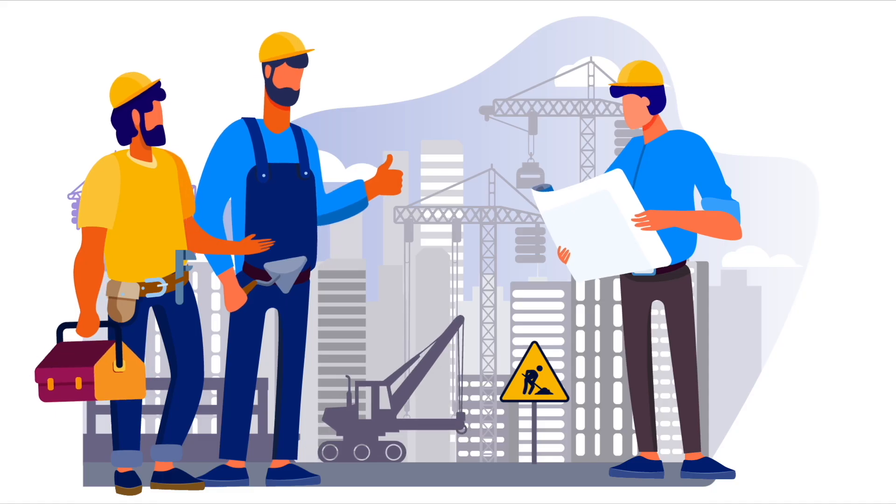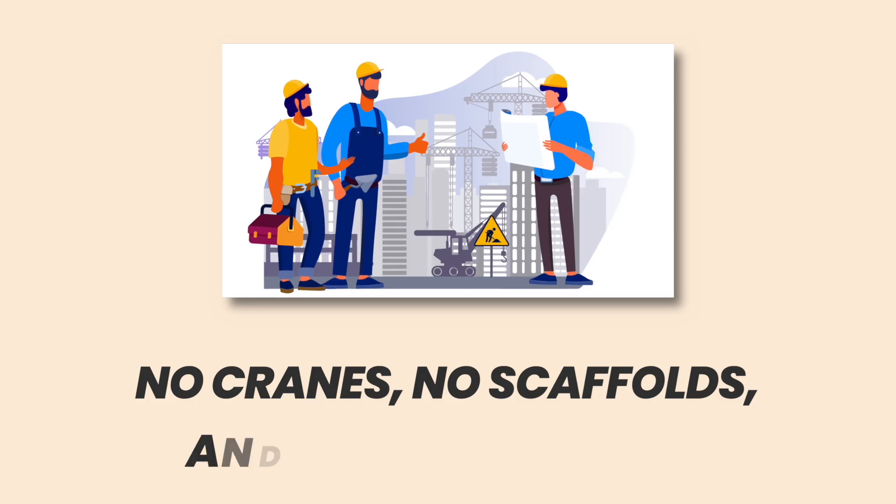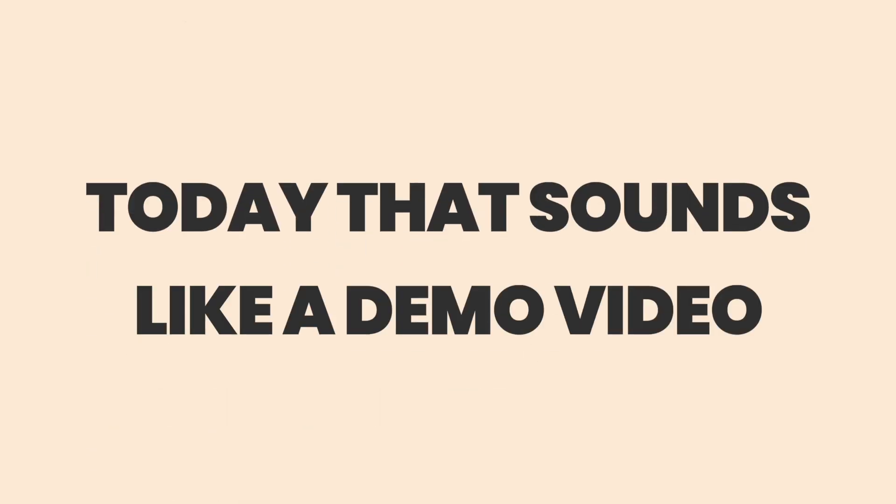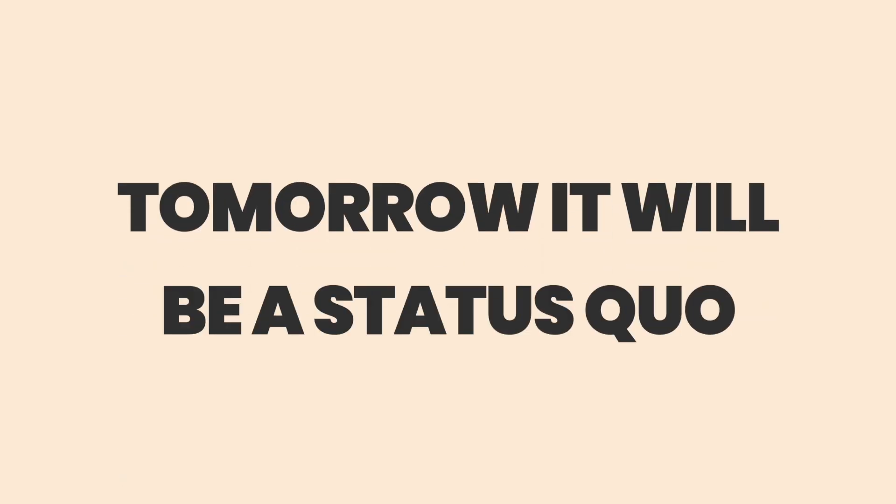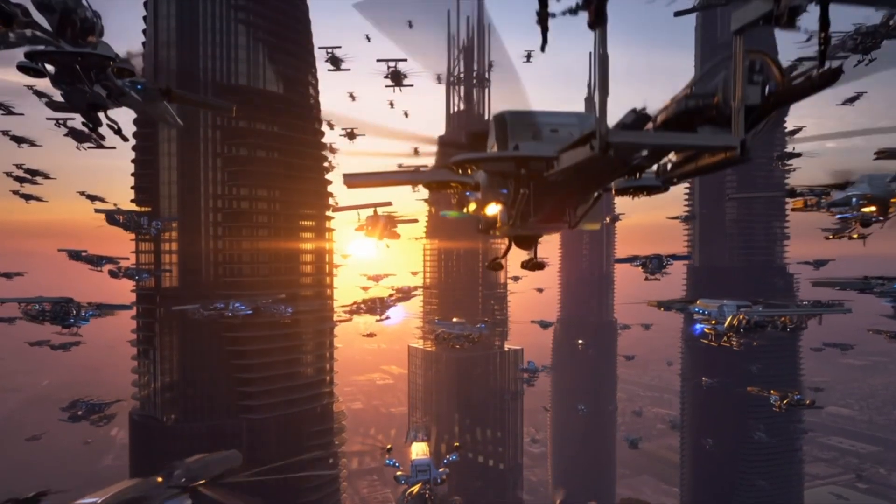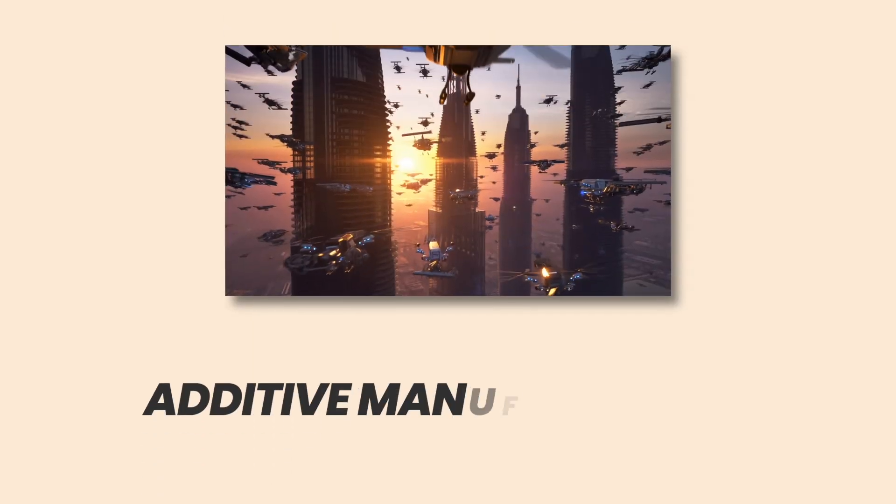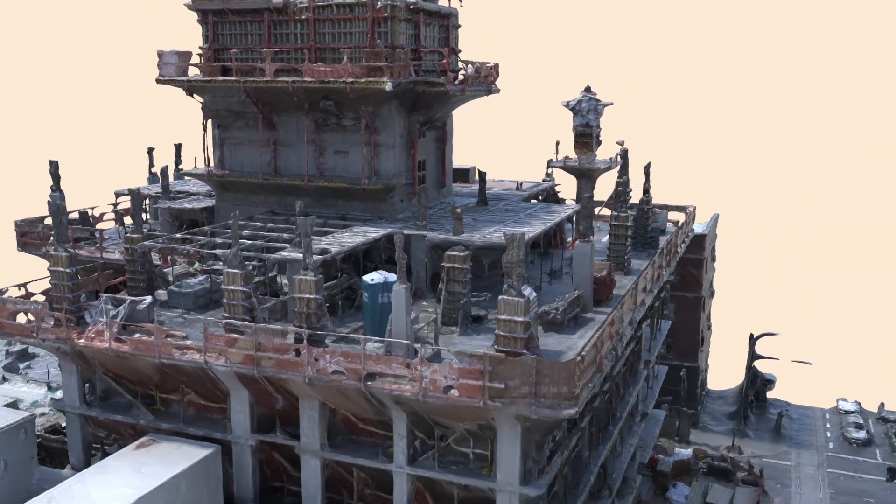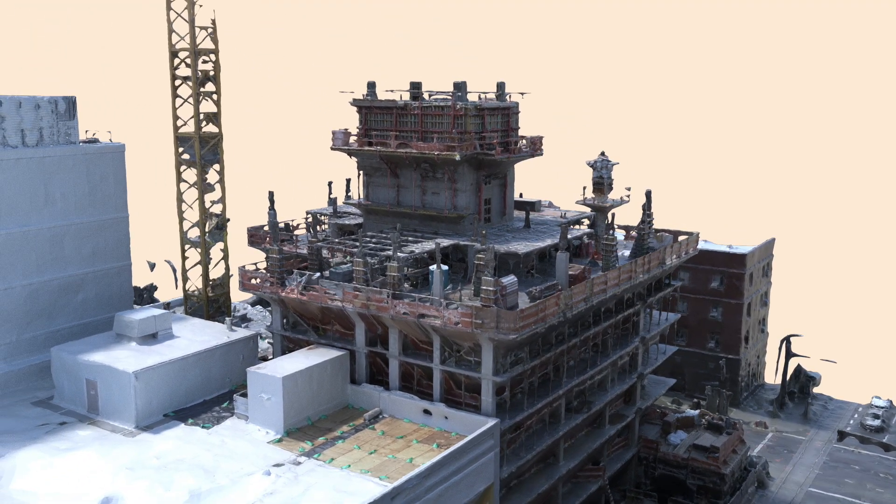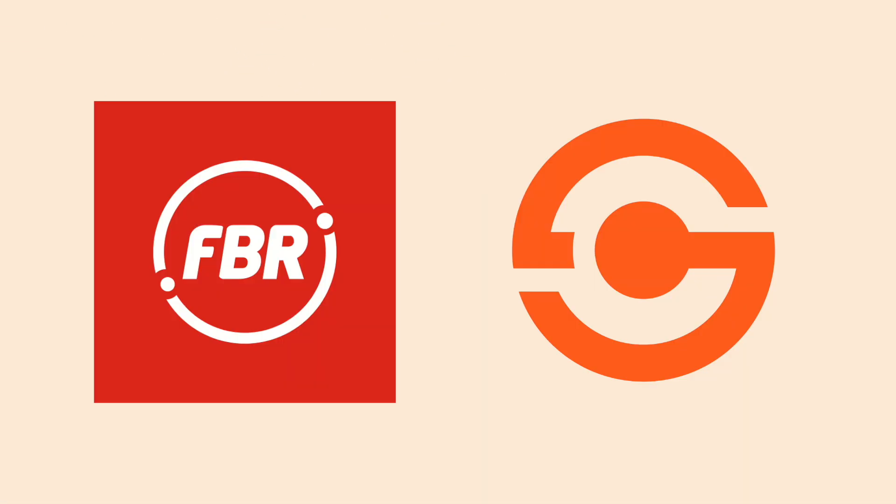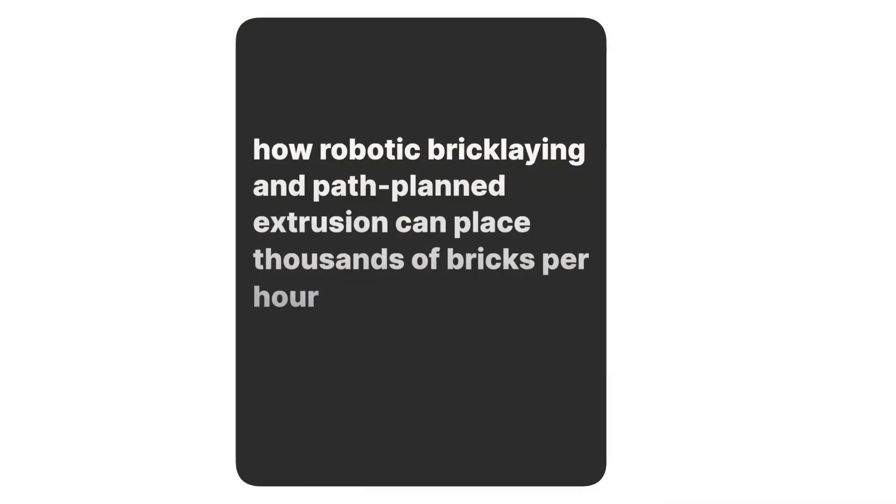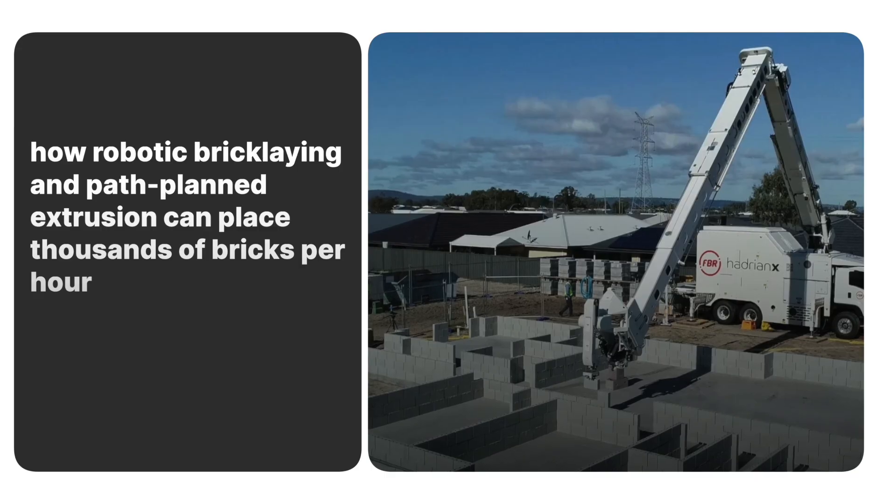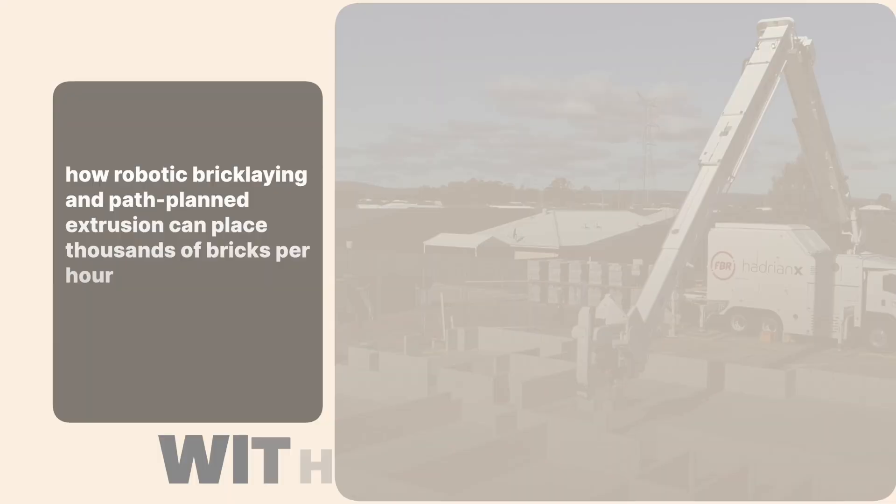Drones as builders. Imagine a construction site with no cranes, no scaffolds, and no human hands in hazardous zones. Today that sounds like a demo video. Tomorrow, it will be a status quo. Concrete 3D printing drones are already in active development. Machines use additive manufacturing to extrude concrete in layers, building walls and structural components faster and cheaper than traditional crews. Companies like FBR's Hadrian X prototype and multiple research labs have shown how robotic bricklaying and path-planned extrusion can place thousands of bricks per hour with millimeter precision.